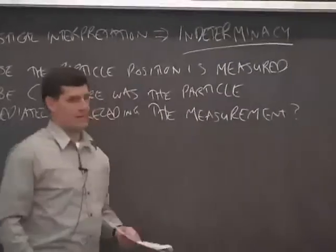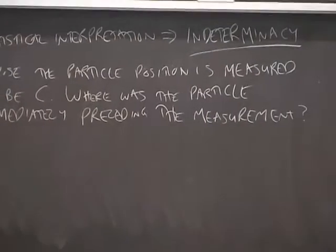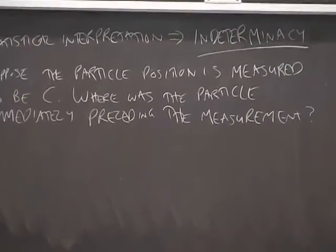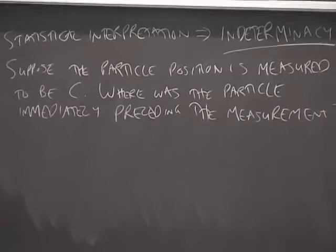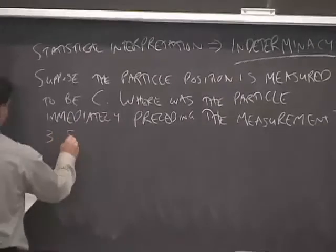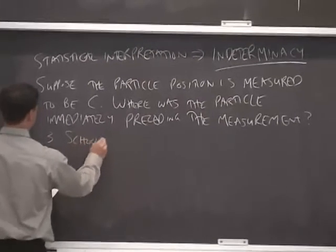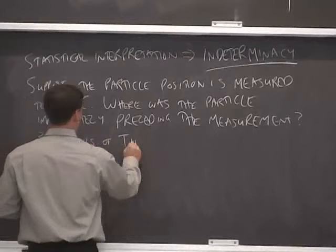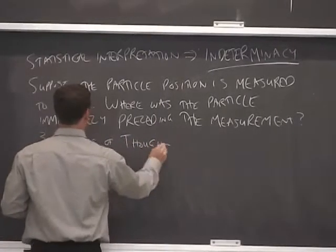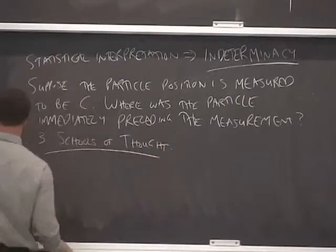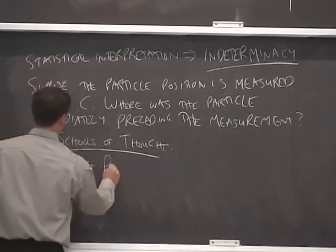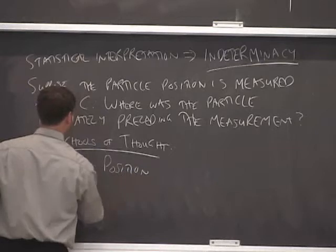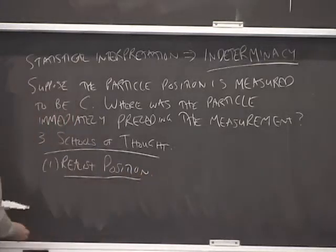So suppose the particle position is measured to be C. Where was the particle immediately preceding the measurement? This, you could argue, is the most hotly debated question in quantum mechanics. And there's three schools of thought. There is not an answer, so to speak.